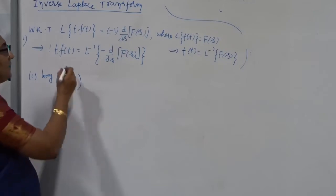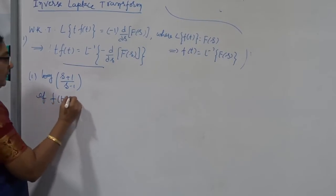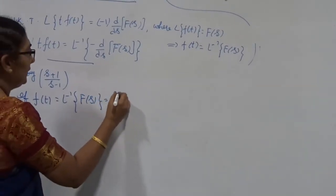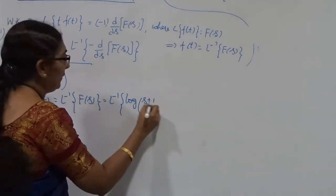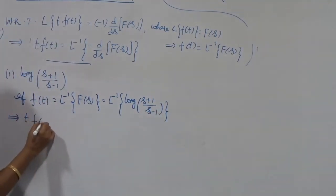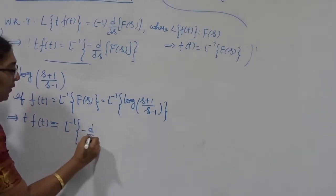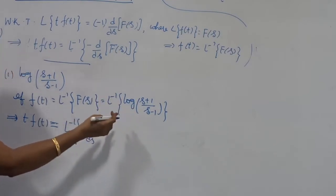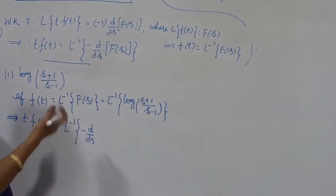The possibility is to go for this approach. If f(t) = L⁻¹ of F(s), and F(s) = log((s+1)/(s-1)), then t·f(t) is nothing but L⁻¹ of minus the first derivative of F(s). Once we differentiate this log expression, it converts to a standard form of inverse Laplace transform, and we easily get a solution in terms of t.